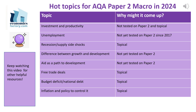Turning to Paper 2 macro, there are fewer untested areas, but a couple stand out in development economics — particularly the difference between economic growth and development, and evaluating why economic growth isn't always accompanied by improvement in development. Aid as a path to development is also an area on which the examiners have not yet set a question.